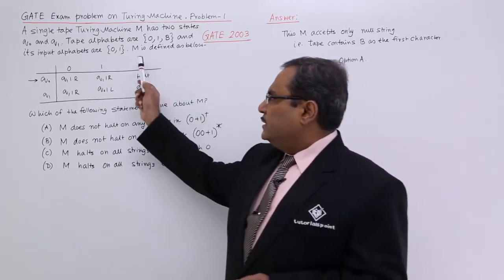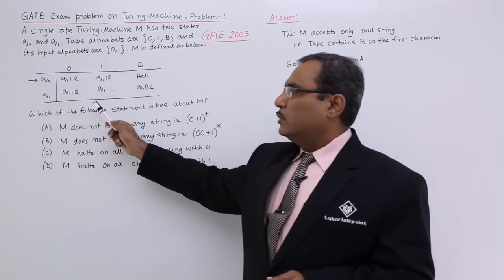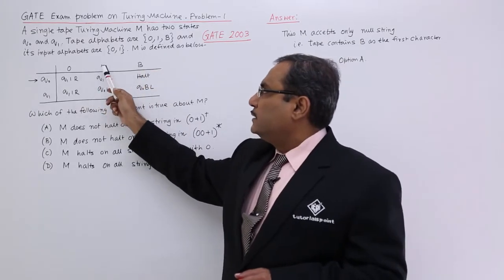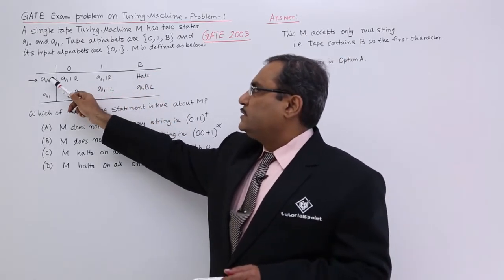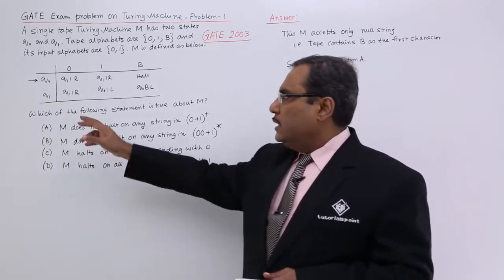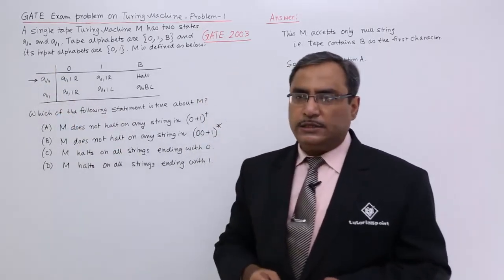Here the Turing machine has been defined. We are getting the same thing - 0, 1, blank are the tape symbols. States are Q0, Q1 and you are getting only one extra information that Q0 is the initial state.